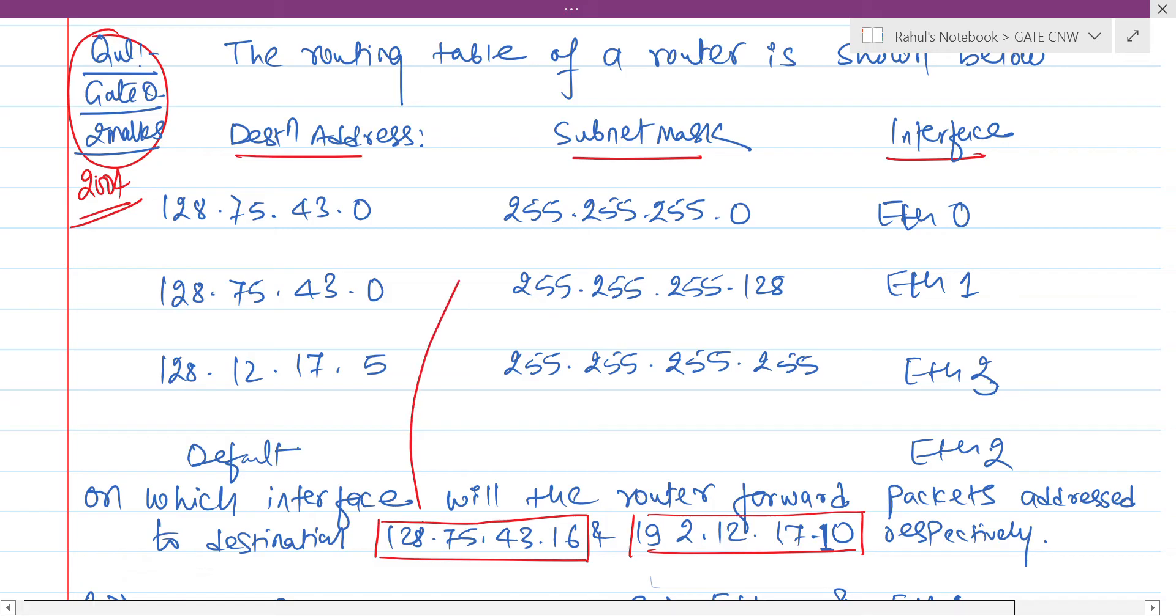And to this and to this. Similarly, you need to perform bitwise AND operation with this, with this, with this.